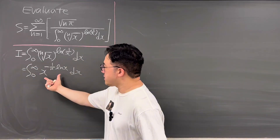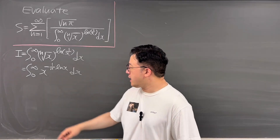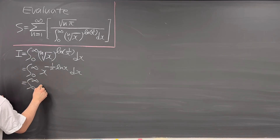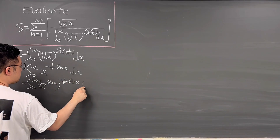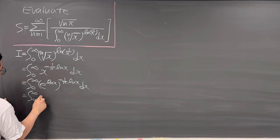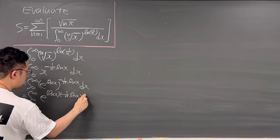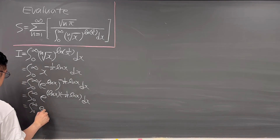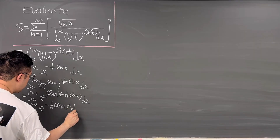This integral is undefined at both the lower and upper bounds, so we should use a limit. But before that, let's represent x as e to the power of ln(x), and rewrite the integral from 0 to infinity of e to the power of ln(x), that to the power of negative 1/n times ln(x), dx. Using the exponential operation, this equals the integral from 0 to infinity of e to the power of negative (1/n) times ln(x) squared, dx.